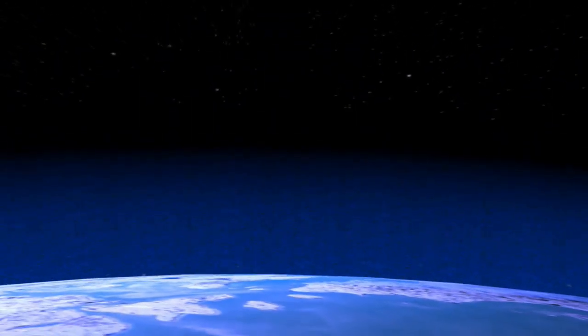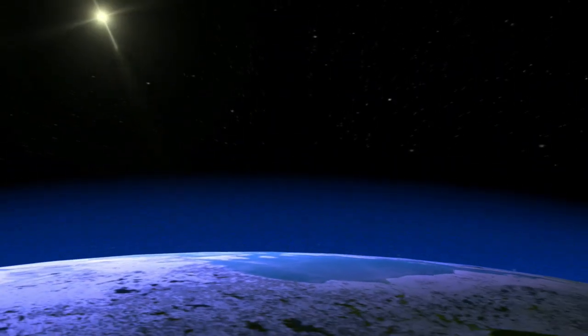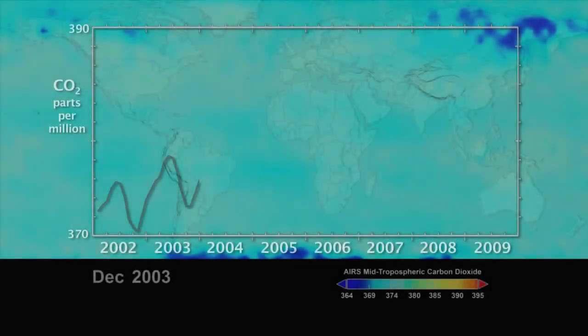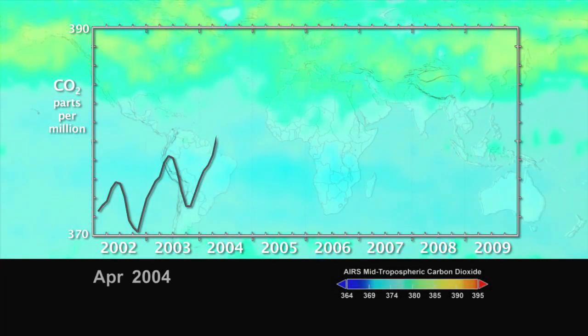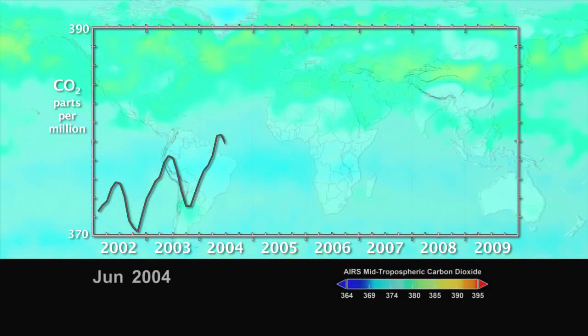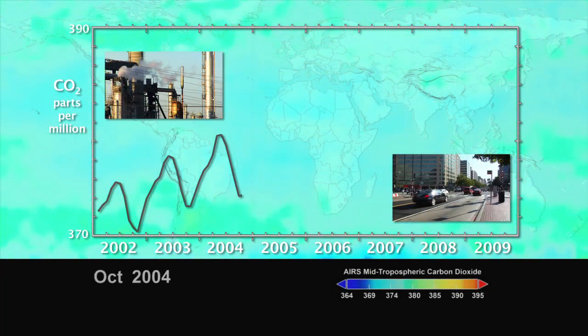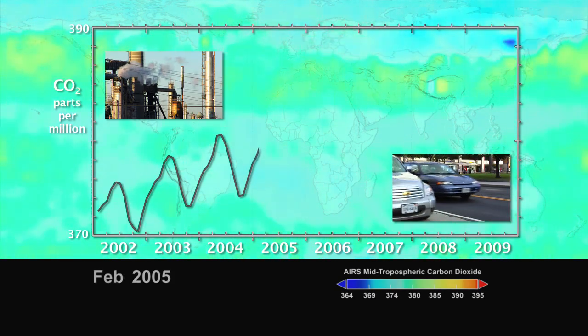Carbon dioxide is a naturally occurring gas in our atmosphere, and monitoring it is like watching our planet breathe. This animation shows the seasonal cycle of carbon dioxide and the increase of carbon dioxide every year due to human activity.